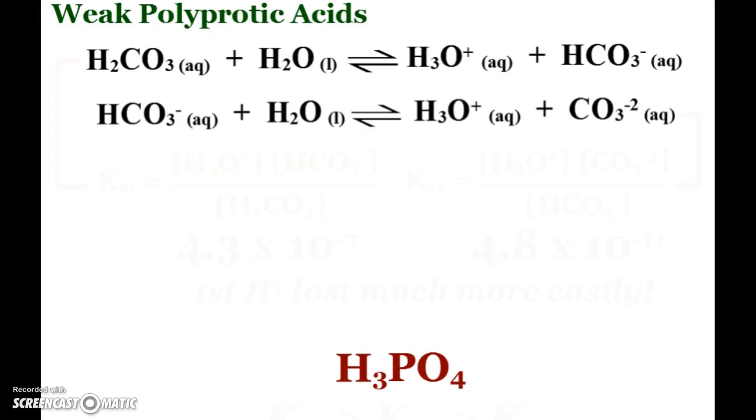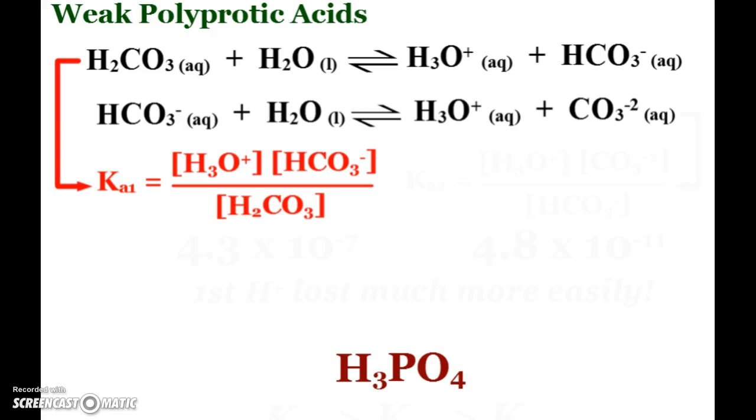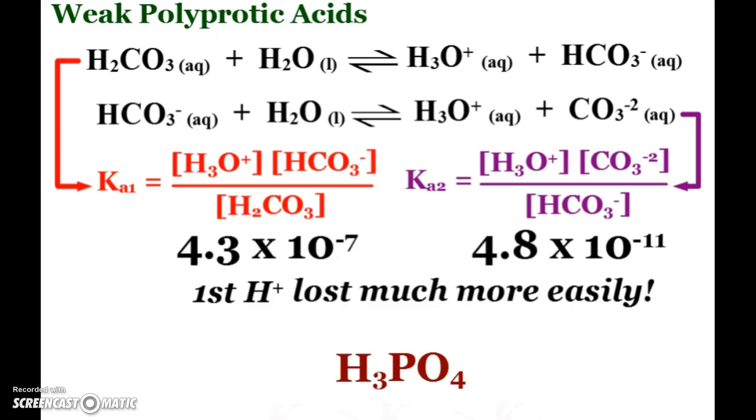Last thing here, we do have some weak polyprotic acids. Carbonic and phosphoric are probably the most common. And just when you look at the data tables, you'll typically see they have more than one Ka. The first Ka is for removing the first hydrogen. The second Ka is for removing the second hydrogen. Those are the expressions. And if you look on the chart, you will find that the first Ka tends to have a larger Ka, 10 to the negative seven, compared to the next one, 10 to the negative 11.